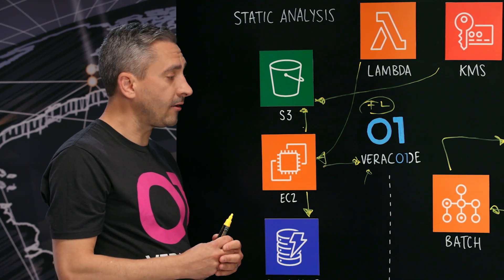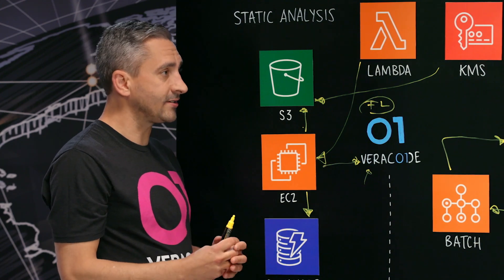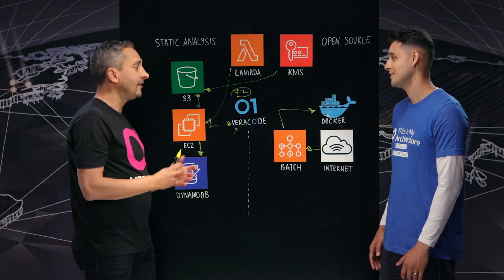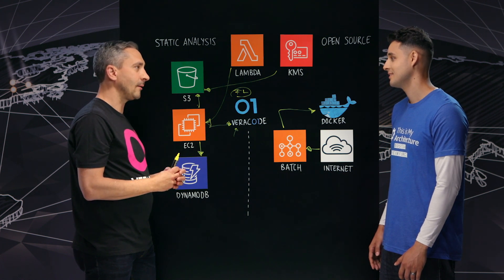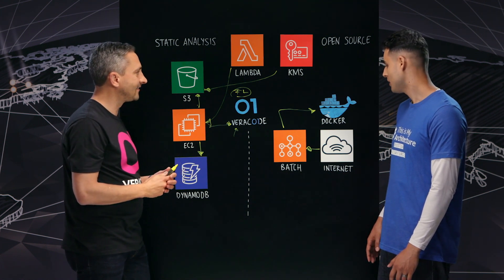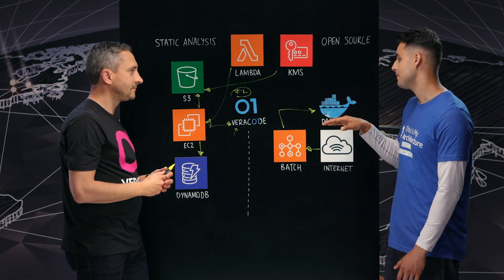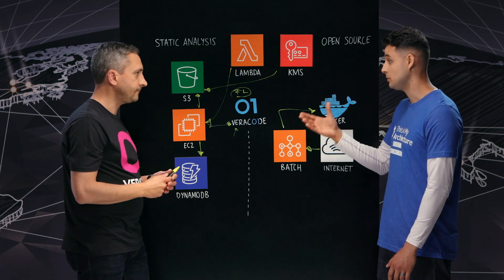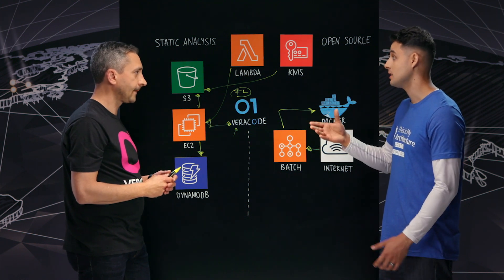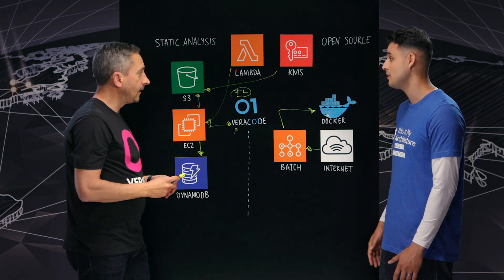When you think about the popularity of JavaScript these days, that's incredibly important. If you're using jQuery in your UX, you want to know which libraries are a no-go. And how exactly does the vulnerability scanning kick off? Is it similar to the automated static analysis — is it kicked off via a scheduled Lambda job as well?